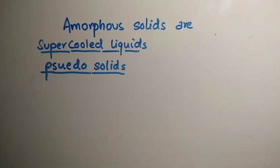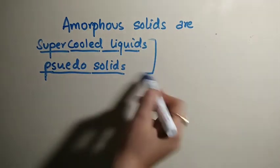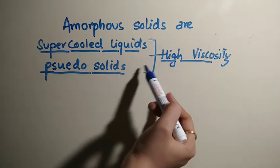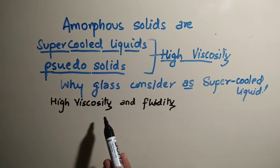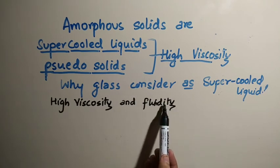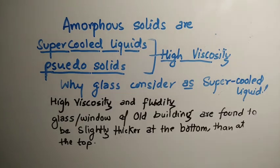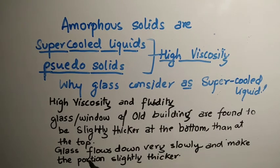One important property of amorphous solids is that they are also called supercooled liquids or pseudosolids. Pseudo means false — they are pseudosolids because they possess high viscosity. A common exam question is: why are amorphous solids called pseudosolids? Because they possess high viscosity. Related question: why is glass considered a supercooled liquid? Because it possesses very high viscosity. Glass is an amorphous solid — it has the tendency to flow but flows very slowly, so it also possesses fluidity. This is confirmed by the example that glass windows of old buildings are found to be slightly thicker at the bottom than at the top, because glass flows down very slowly and makes that portion slightly thicker.